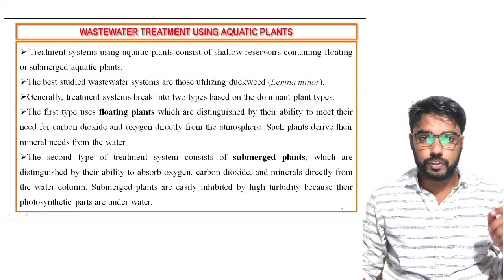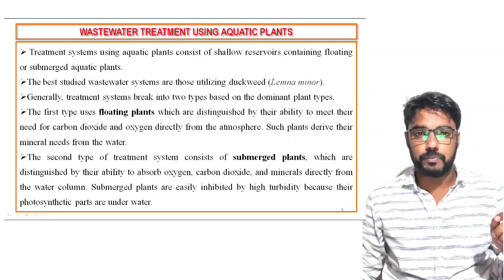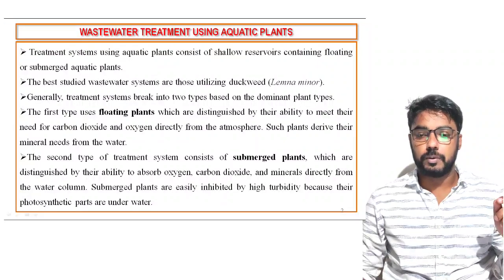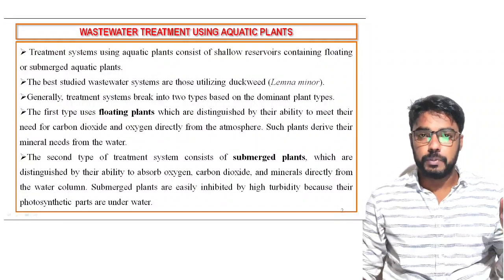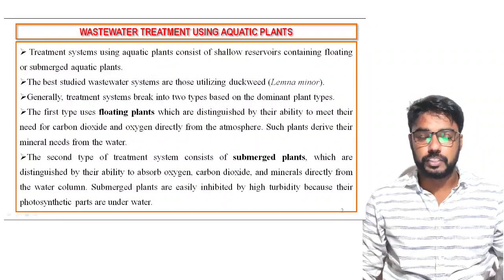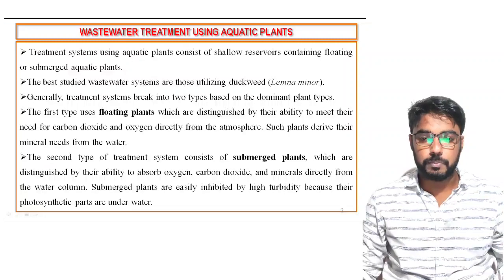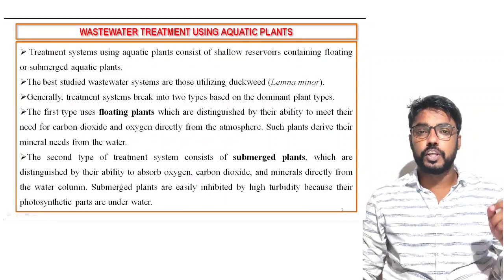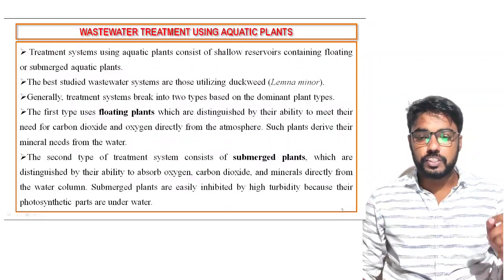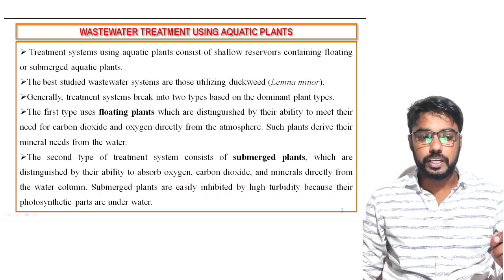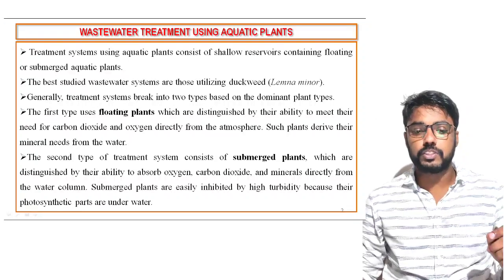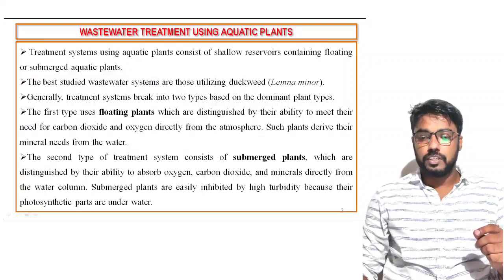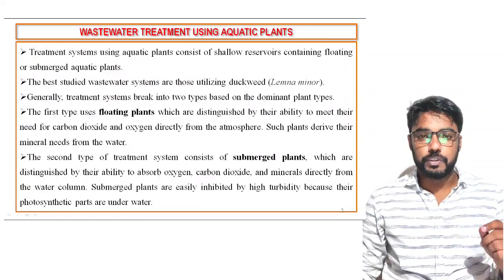Generally, this aquatic plant system breaks into two types based on the dominant plant types used for the wastewater treatment system. The first type uses floating plants, which are distinguished by their ability to meet their need for carbon dioxide and oxygen directly from the atmosphere. Such plants derive their mineral needs from the water.